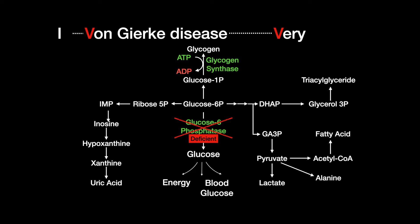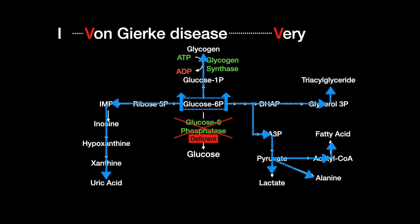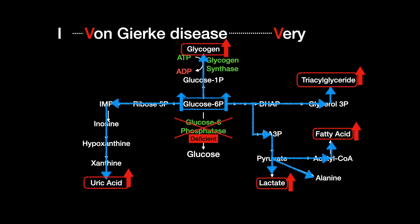Since this mechanism is faulty, gluconeogenesis stops at glucose-6-phosphate and accumulates. This causes it to push equilibrium into other pathways, resulting in excess glycogen that can cause the liver and kidneys to enlarge, elevated blood lactate, triacylglycerides, and uric acid, which leads to gout.